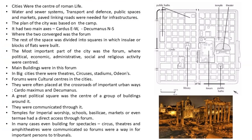Now let us discuss about Roman town planning. The cities were the center of Roman life — water and sewer systems, transport and defense, public spaces and markets, and paved linking roads were needed for infrastructure. The plan of the city was based on the military camp. It had two main axes: Cardus (east-west) and Decumanus (north-south). Where the two converged was the forum. The rest of the space was divided into squares called insulae, or the blocks or flats. The most important part of the city was the forum where political, economic, administrative, social and religious activities were centered.